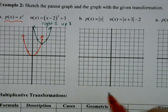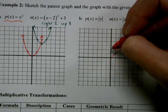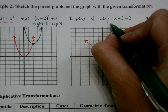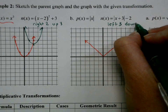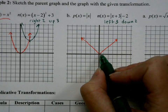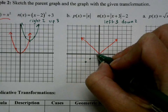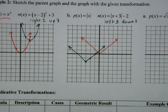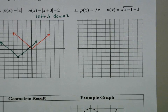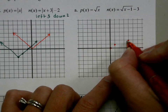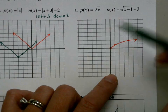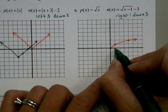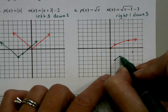For absolute value of x, that's our V shape. In this transformation, we're going to go left 3 and down 2, so the vertex of my absolute value goes left 3 and down 2 and we graph from there. Then for the square root of x, I'm going to go right 1 and down 3 — right 1, down 3 — and then we'll have our new graph.